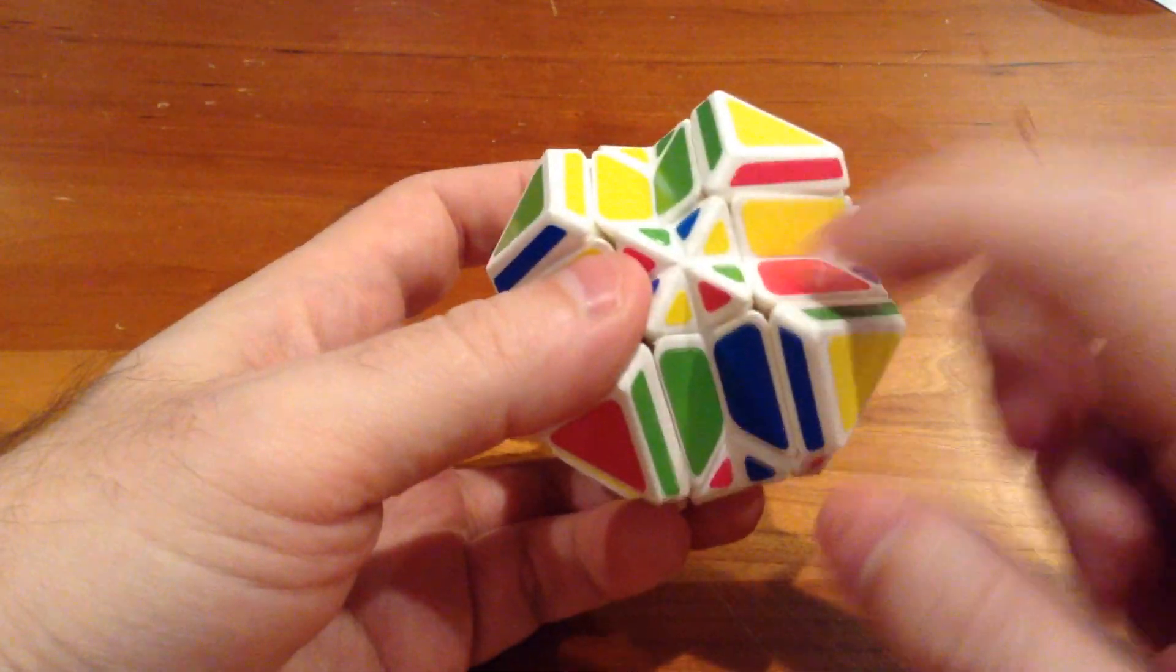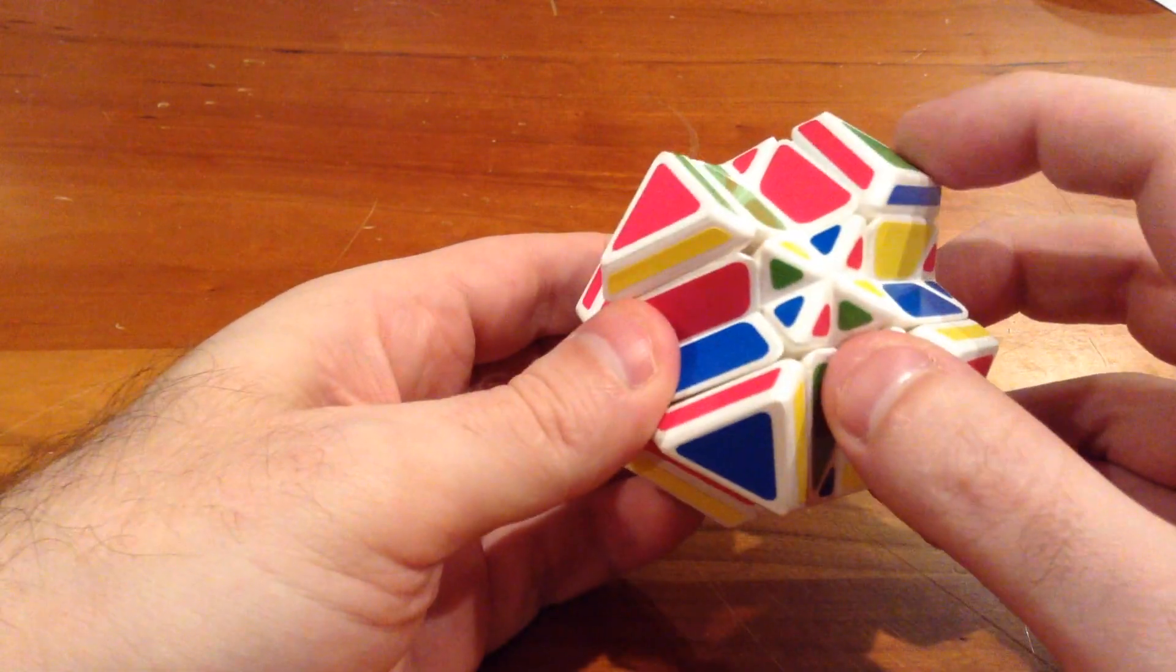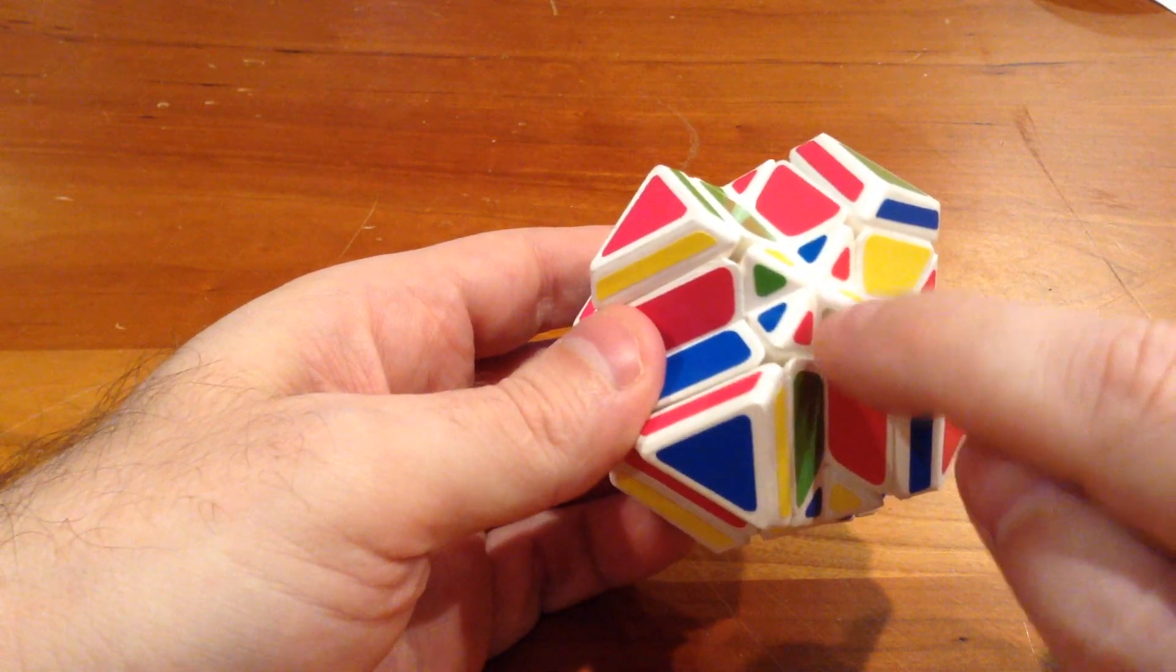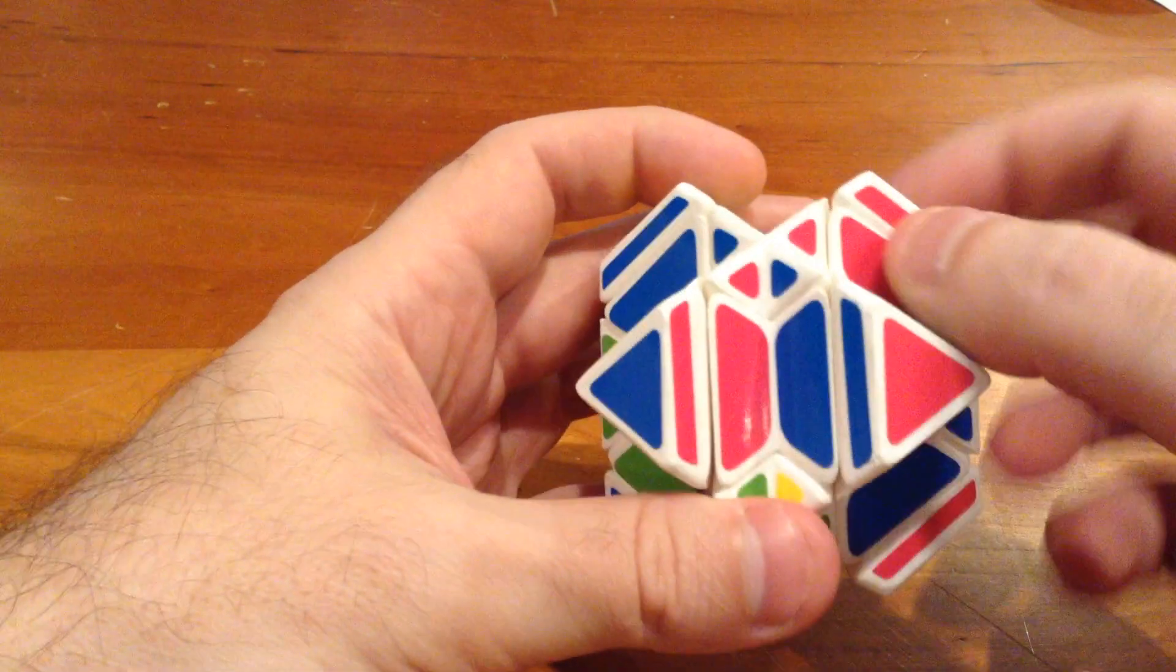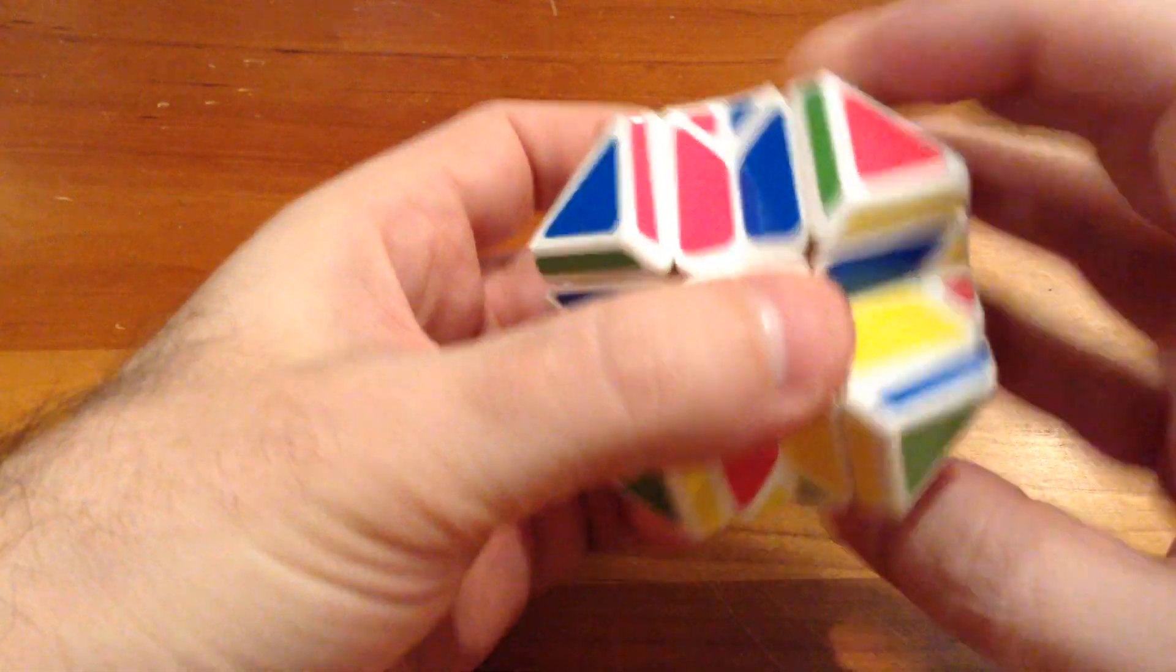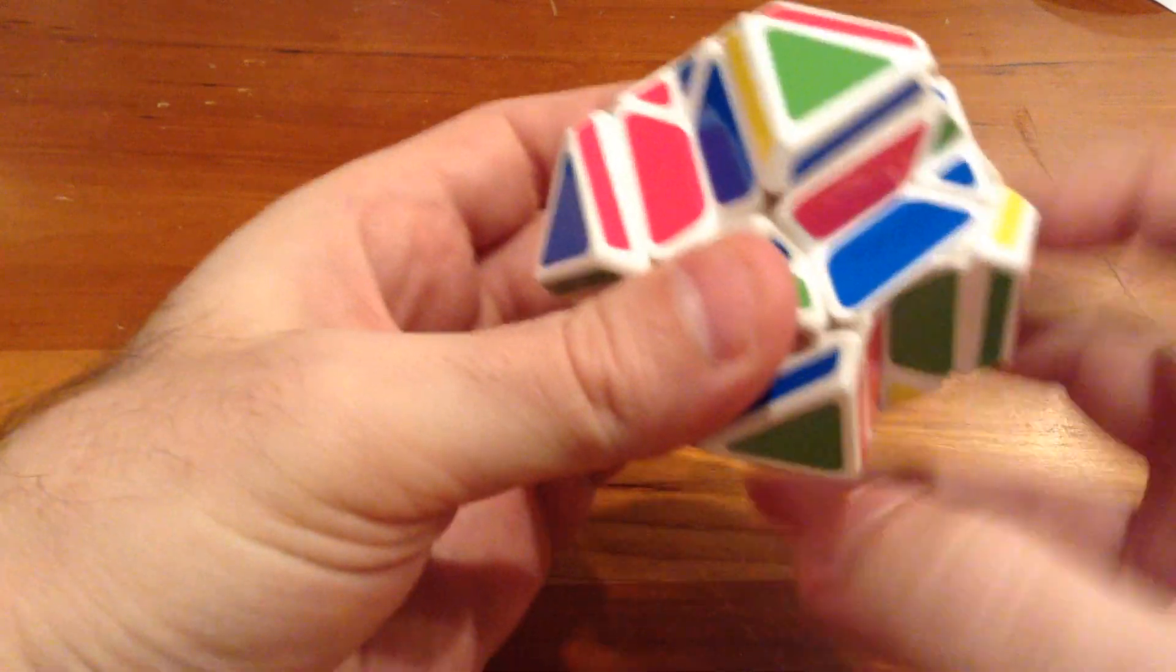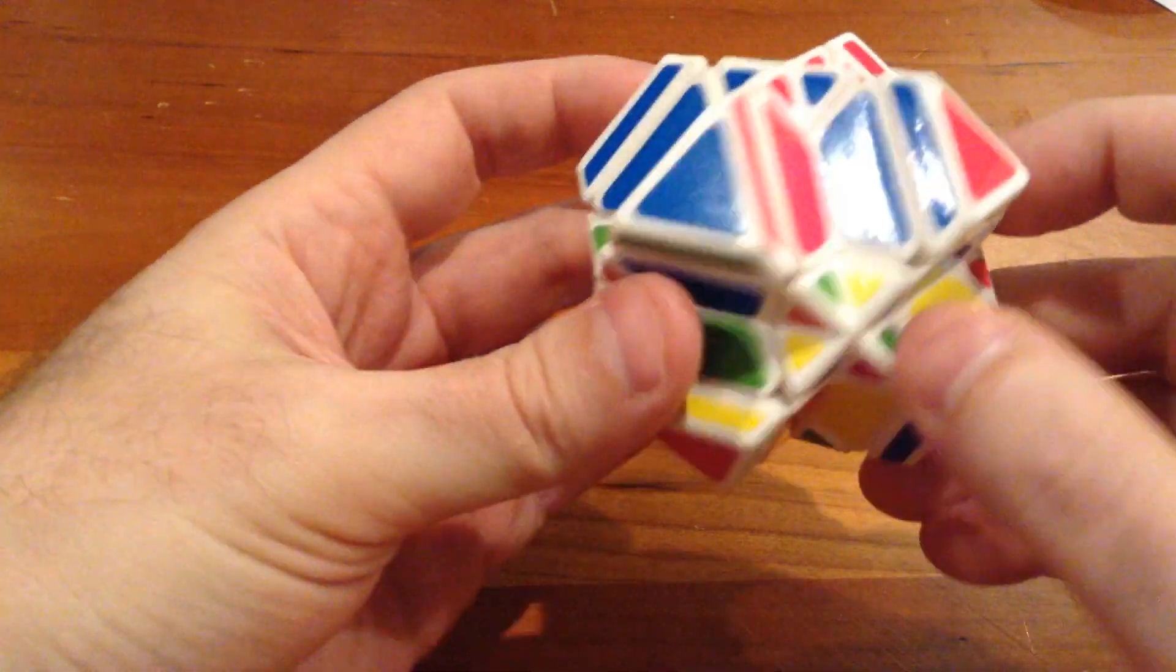Now, before we do the edges here, we need to make sure all our centers are oriented properly. And we're going to do that by... I look, if I turn this one over 180 degrees, the green will be where it needs to be here. So what I need to do is take these three pieces and move them out of the way so I can rotate this. So I'm going to move them down here and then over here. So they're now down over here. Now, I'm going to rotate that 180 degrees, and I'm going to put it back. And now I've got my center oriented properly. So this one, I can also see is 180 degrees. So I'm going to do that exact same move. There's my 180 degree turn, and I'm putting them back. And there we go.